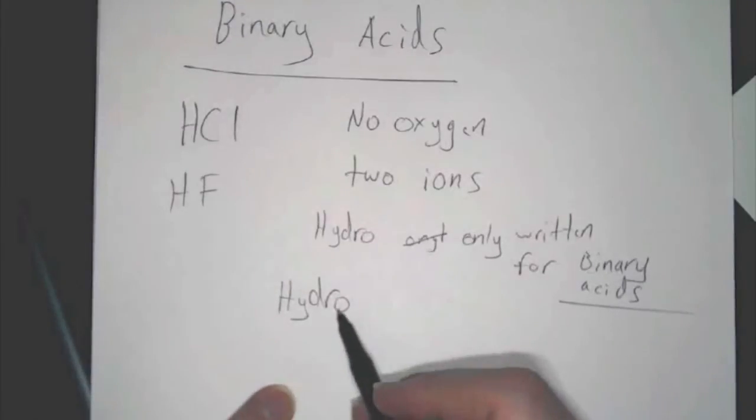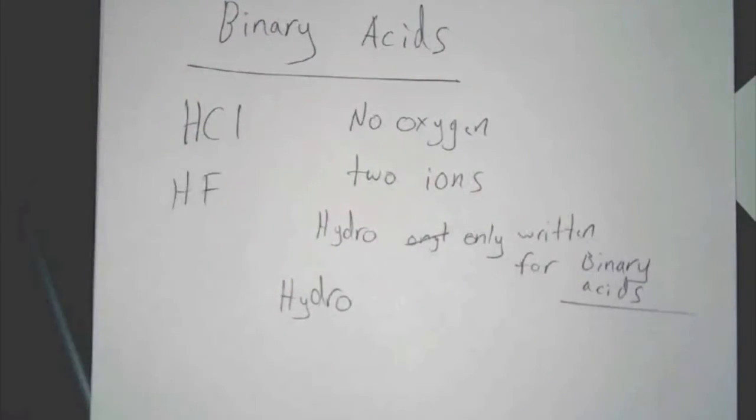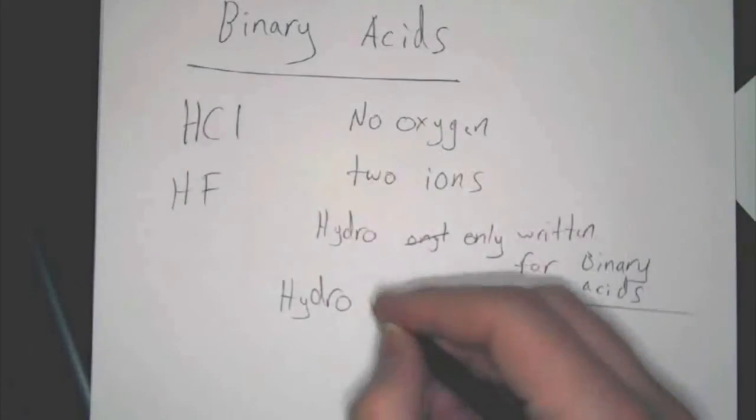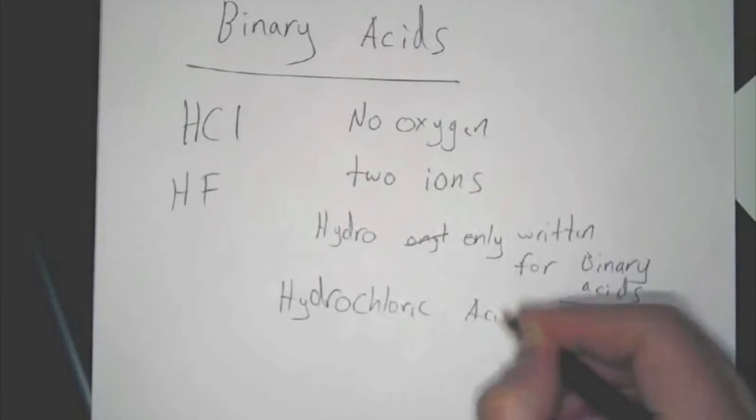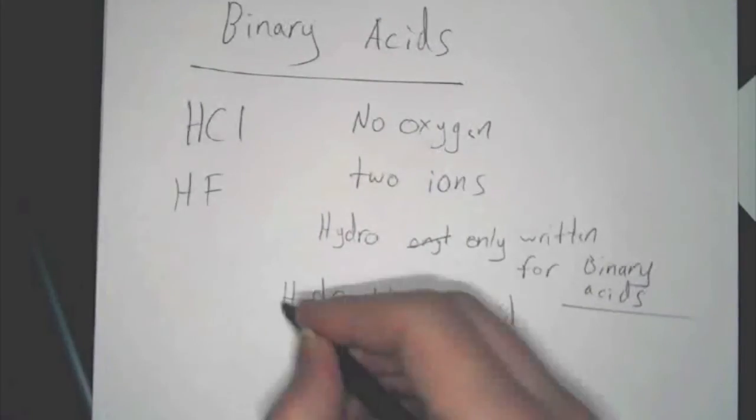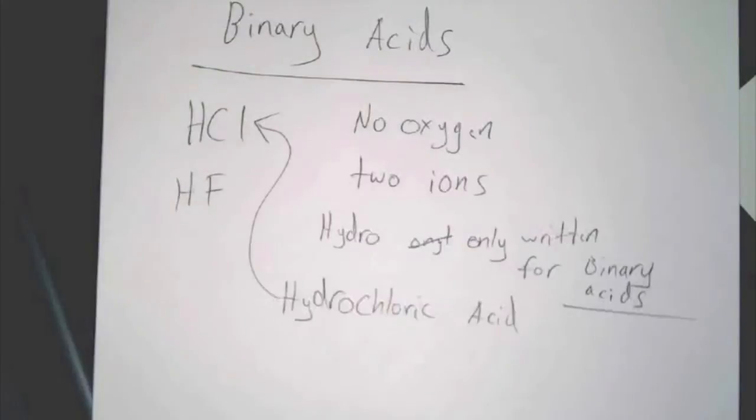In our example, it's hydro, and then what is our element after it? Chlorine. So, chlorine, you change it from chlorine to chloric. You end anything in a binary acid with -ic. So, hydro, chloric, and then all you do is write acid at the end. That's it.